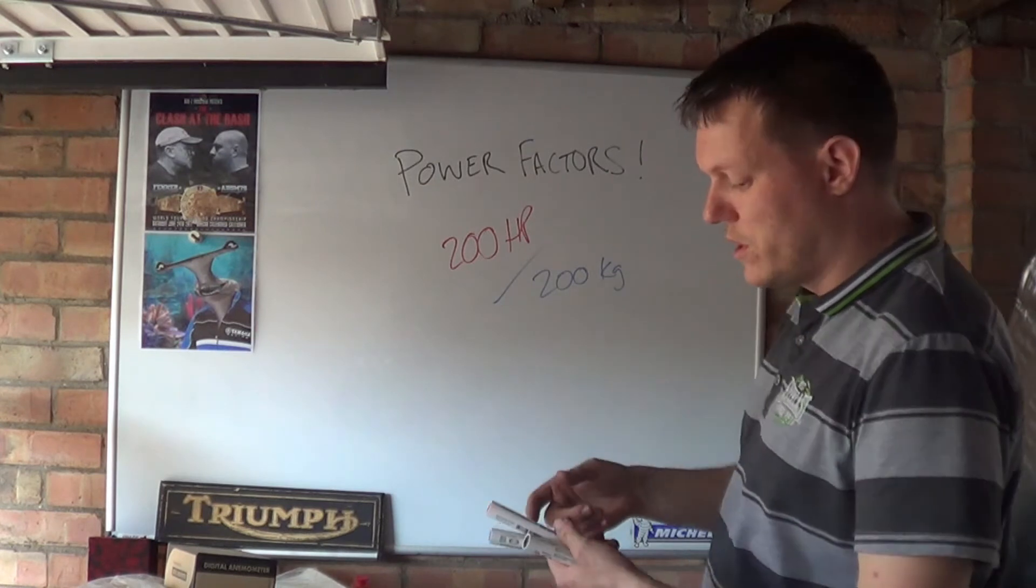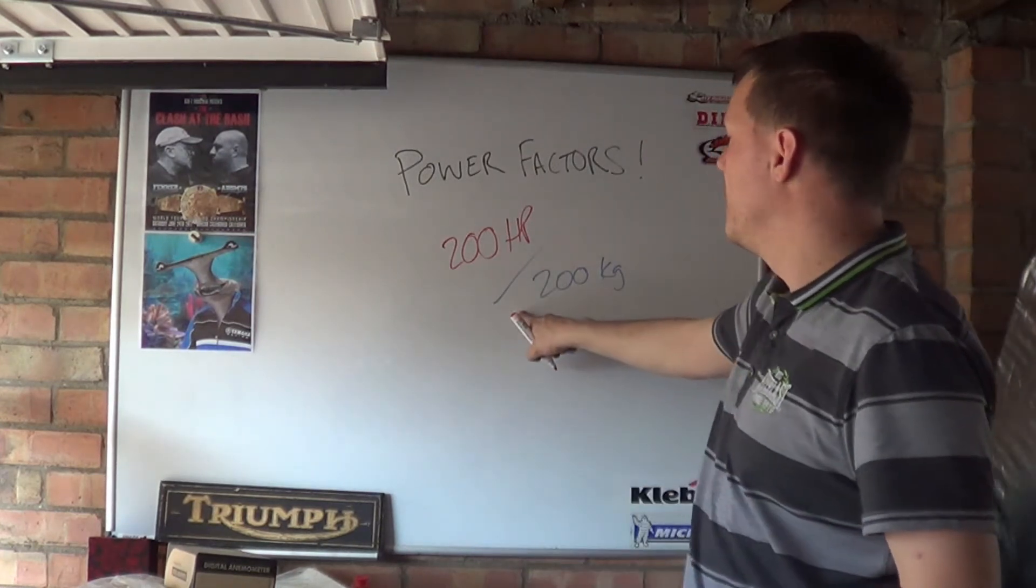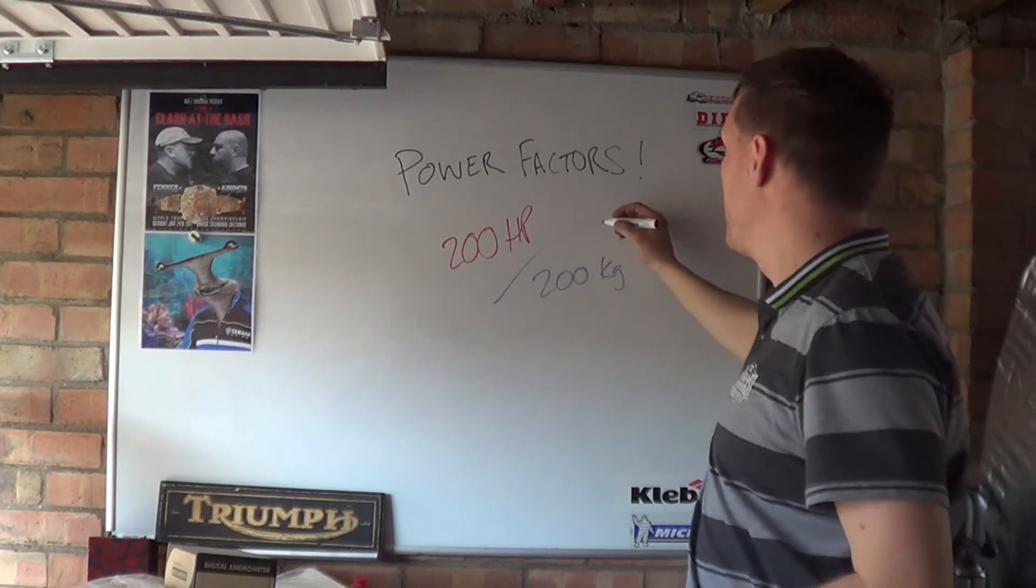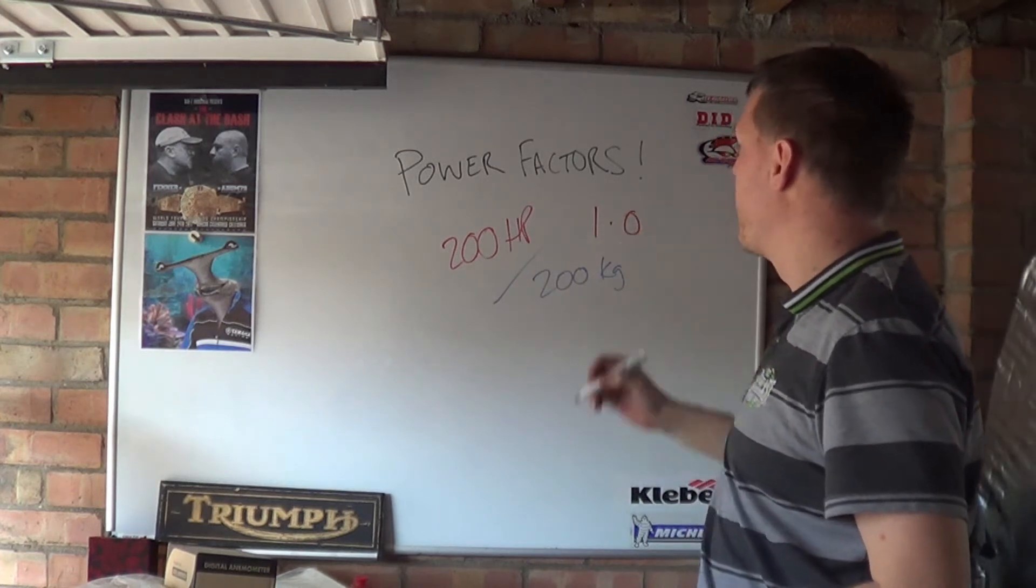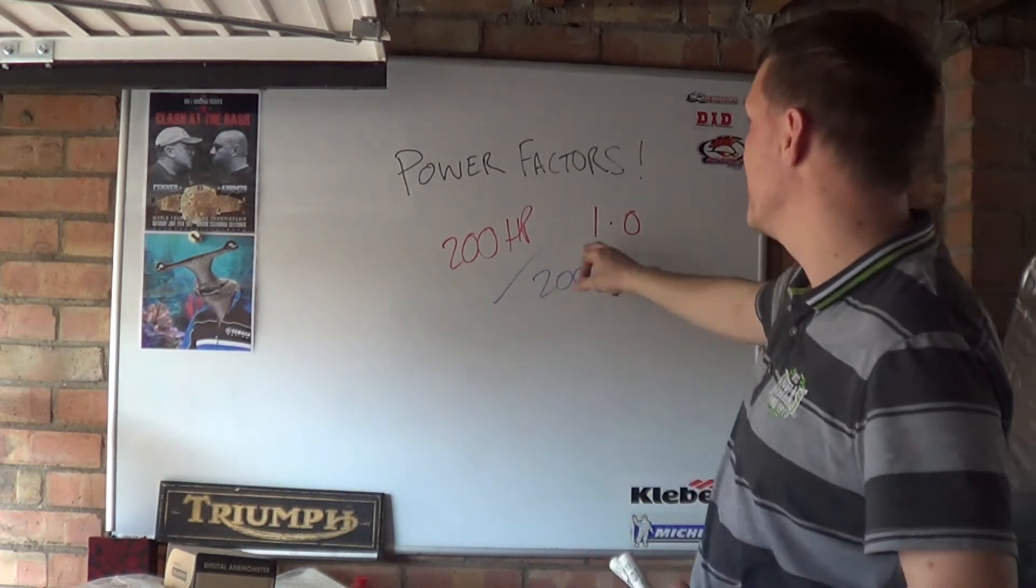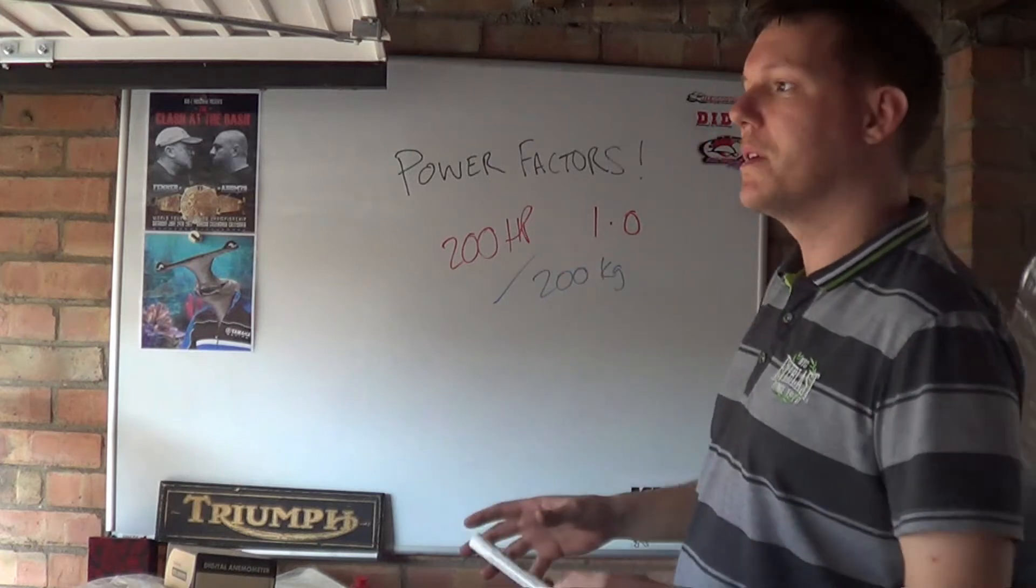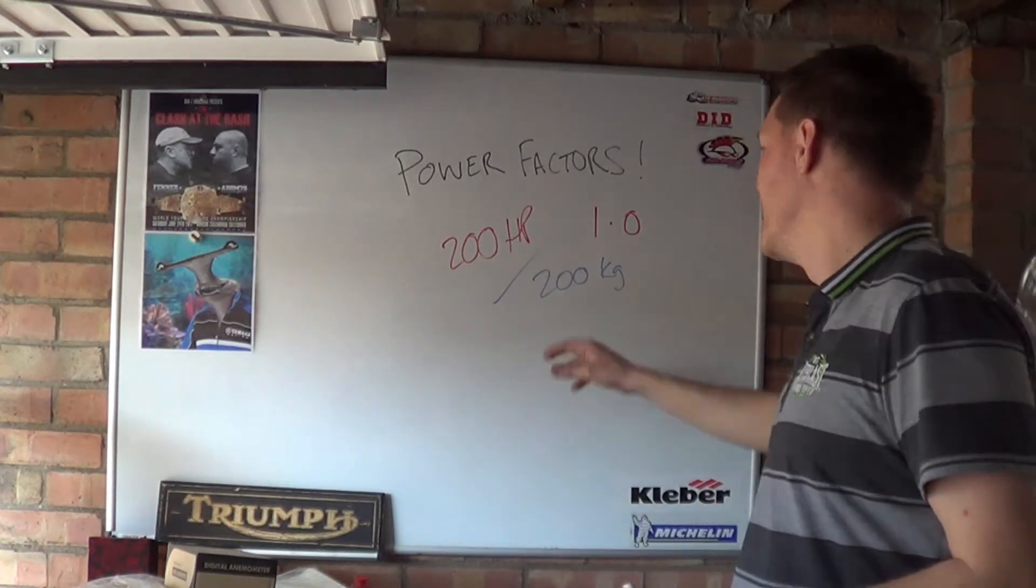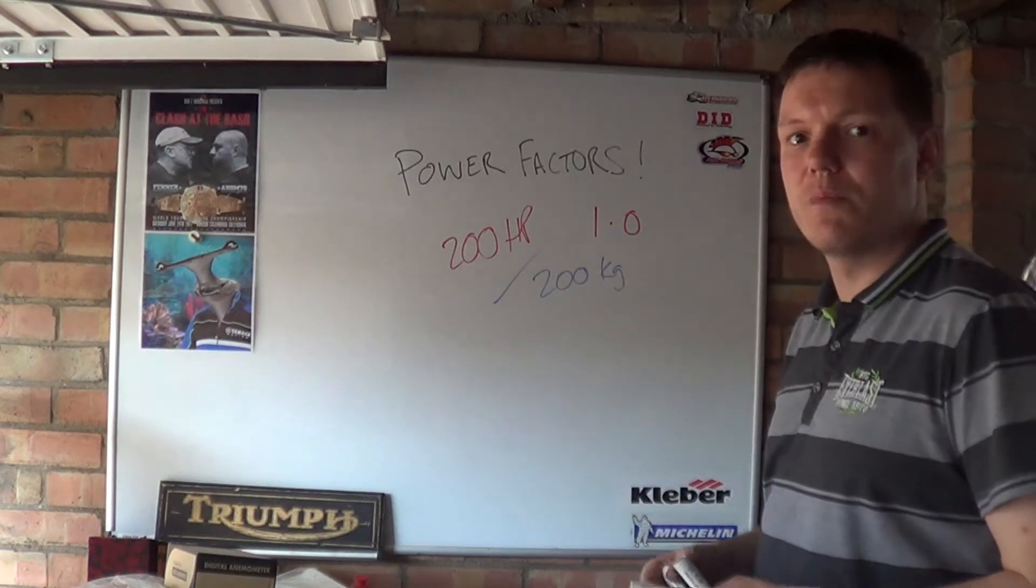So what you do is you divide one by the other. And if you do this, it's one for one. So you get a power factor of one, just one zero. That's it. It's a small number. And that's the beauty about power factors instead of using horsepower per tonne is that they're really generally quite small numbers.